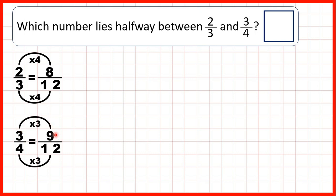Now we know that right in the middle or halfway between eight and nine we have eight and a half. But again we can't write eight and a half over twelve as our answer because we don't usually have fractions within fractions.